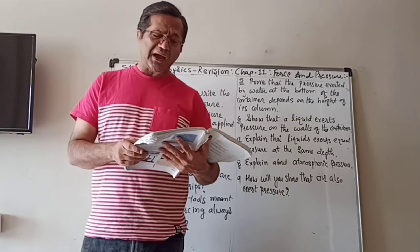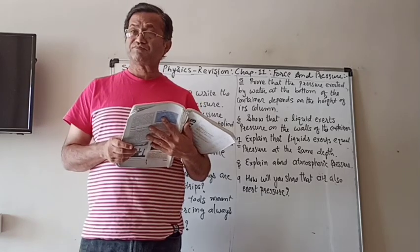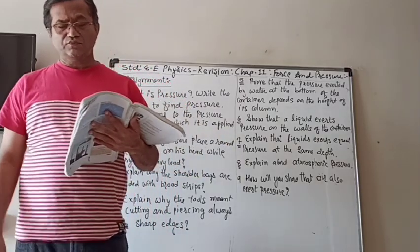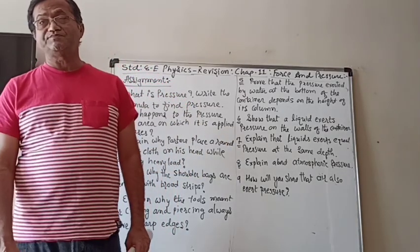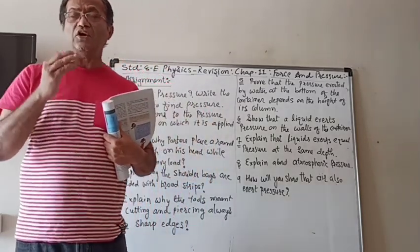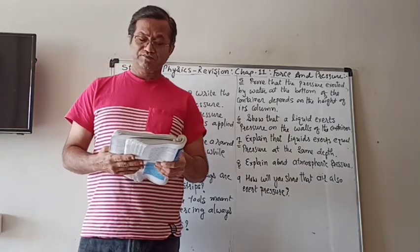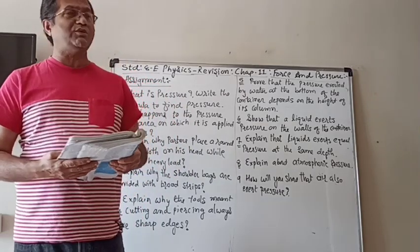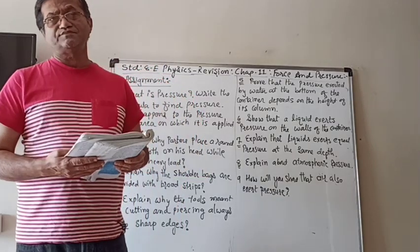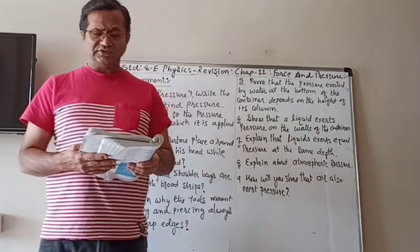Sometimes when we apply force, we call it pressure. So what is pressure actually? The force acting on a unit area of a surface is called pressure. The force which is acting on a unit area of a surface is known as pressure. The formula is: pressure equals force divided by area. Whatever force is applied, divided by the area on which the force is acting, gives you the value of pressure.